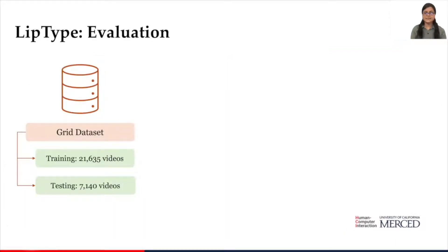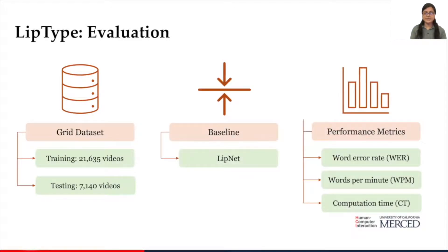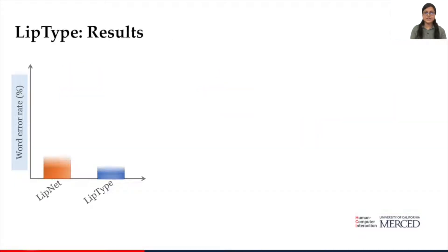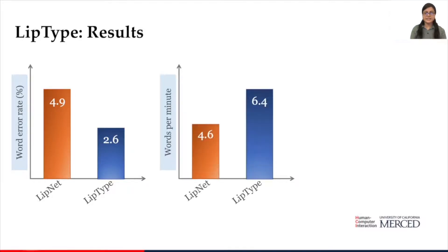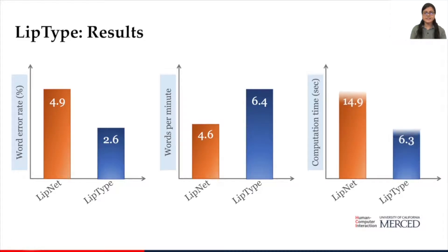We trained and tested the LipType model on the GRID dataset, the same dataset the parent model was trained on. For evaluation, we compared LipType with the parent LipNet model. Results revealed that LipType outperformed LipNet: it showed a 47% reduction in error rate, a 39% increase in words per minute, and an 8.6-second reduction in computation time.